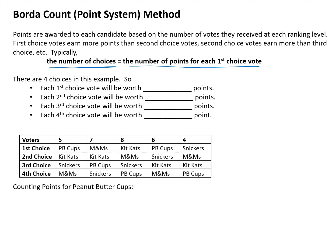Typically, the number of choices equals the number of points for each first choice vote. In this candy example with four candidates, each first choice vote is worth four points, second choice is three points, third choice is two points, and fourth choice is worth one point. Every candidate gets at least one point, even for the last choice.